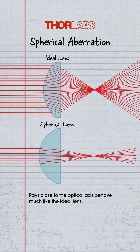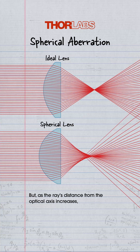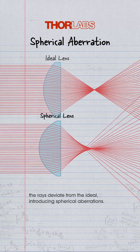Rays close to the optical axis behave much like the ideal lens. But, as the rays' distance from the optical axis increases, the rays deviate from the ideal, introducing spherical aberrations.